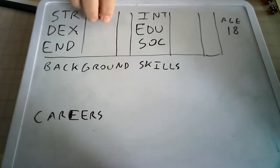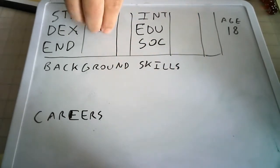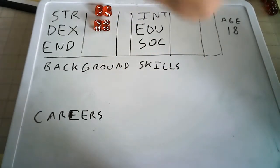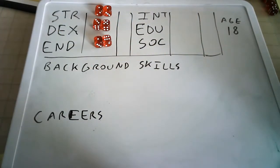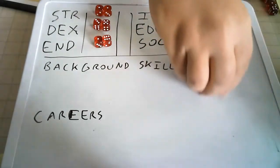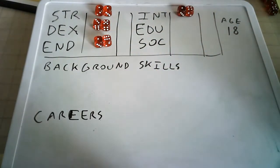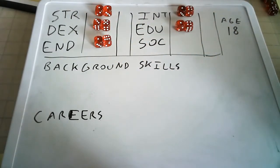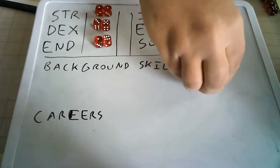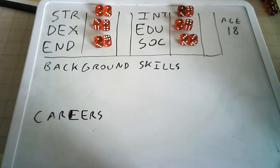Wow, strength is absolute crap. How did I get anywhere? But my dexterity is amazing. This is pretty decent. Endurance is decent. Why the hell am I so weak then? Intelligence is okay. Education is decent. And my social standing is okay.